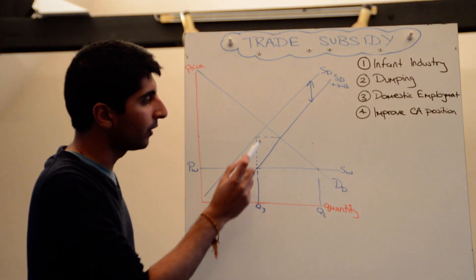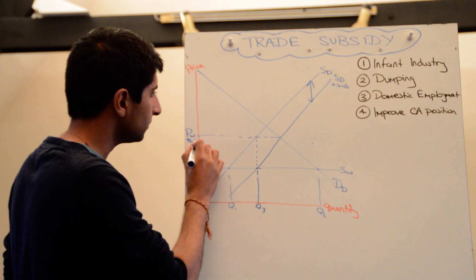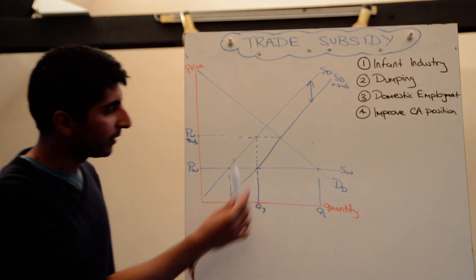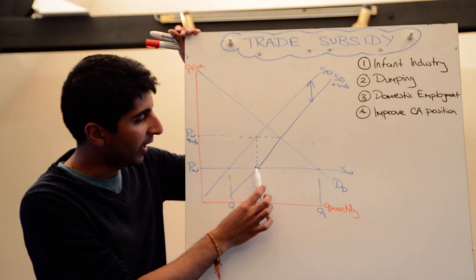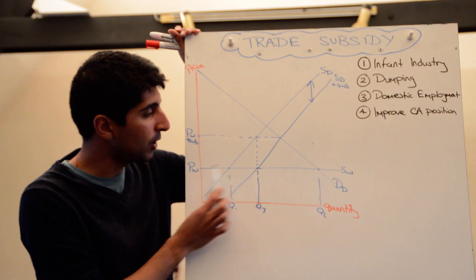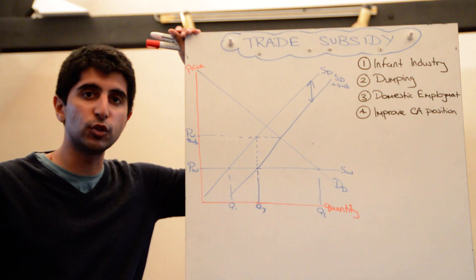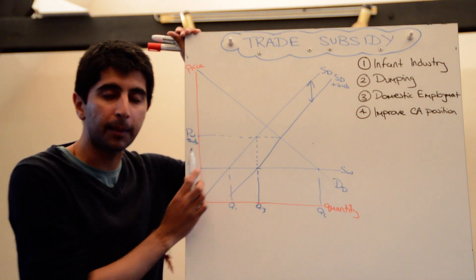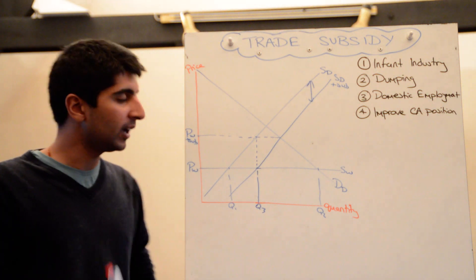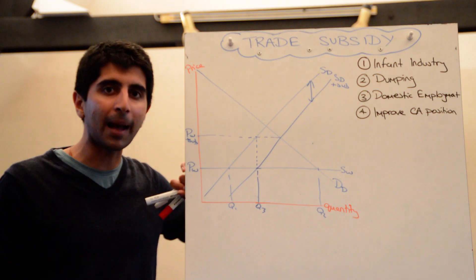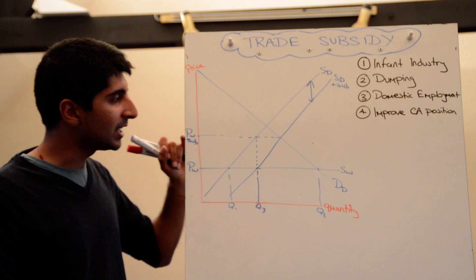This new point also tells us the effective price that suppliers are getting. How do we know that? Because that is the vertical distance between the two supply curves. So at Q3, they're getting the actual price, PW, and they're getting a subsidy on top. The value of the subsidy is the vertical distance between the two supply curves, which takes us to PW plus sub. Now crucially, for you guys to understand this, the price in the market does not change. The price in the market is still at PW, but the effective price that domestic suppliers are getting is PW plus sub.